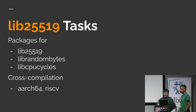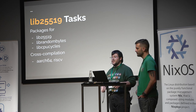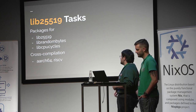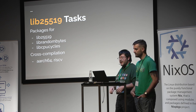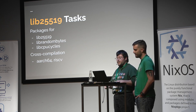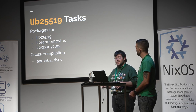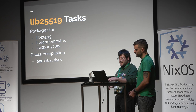We want to talk about the different projects we were working on to learn about Nix. First of all, we worked on lib25519, a crypto library implementing the curve 25519. In order to package this project, we also needed to package its dependencies, like librandom bytes for random numbers and libCPU cycle mainly for benchmarking. This project was really interesting because we needed to dig into cross-compilation, as it had to work with different architectures and assembly code.